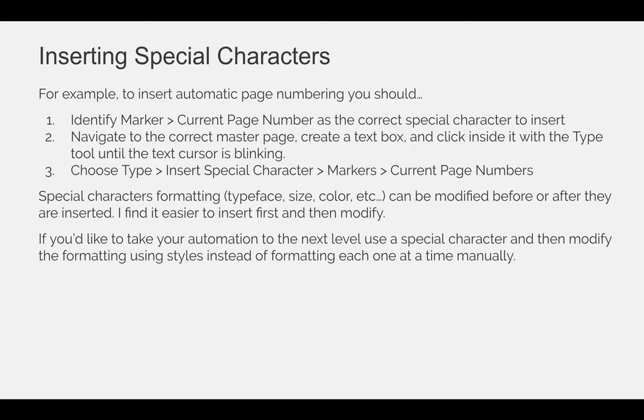Special characters formatting like typeface, size, color, etc. can be modified before or after they are inserted. I find it easier to insert them first and then modify it, but you could put a placeholder for page numbers and just type like 'page 27' and modify it, and then highlight page 27 and then insert your special character, and it will override the text 27 and insert the automated page number.